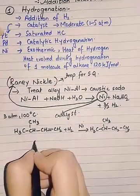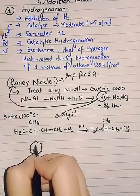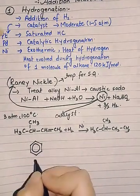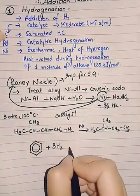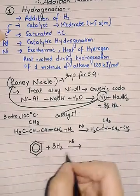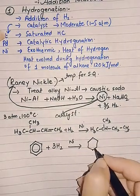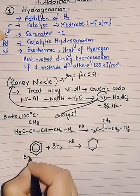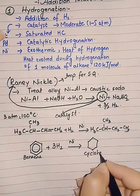In another reaction, we take benzene, which is an aromatic hydrocarbon. We add hydrogen in the presence of Raney nickel, and all the double bonds will be saturated. As a result, benzene becomes cyclohexane.